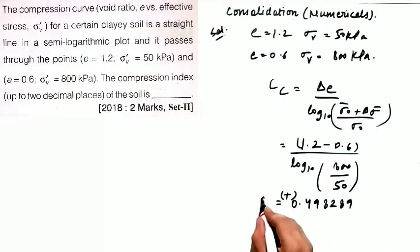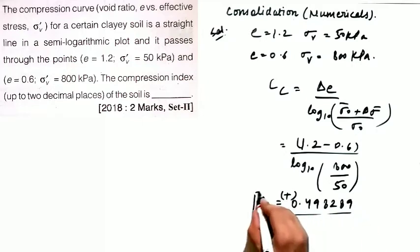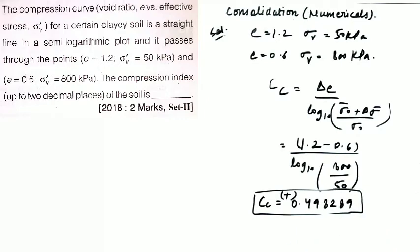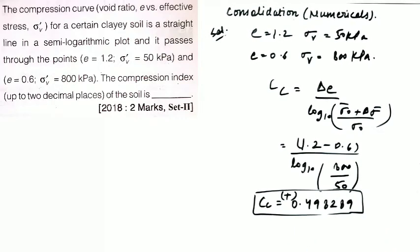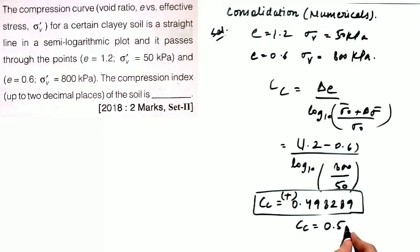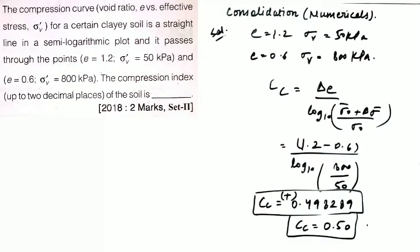Remember that Cc is always positive. Solving: Δe equals 0.6 and log₁₀(800/50) equals log₁₀(16). This gives Cc equal to 0.50, rounded to two decimal places. This is the required value of the compression index.